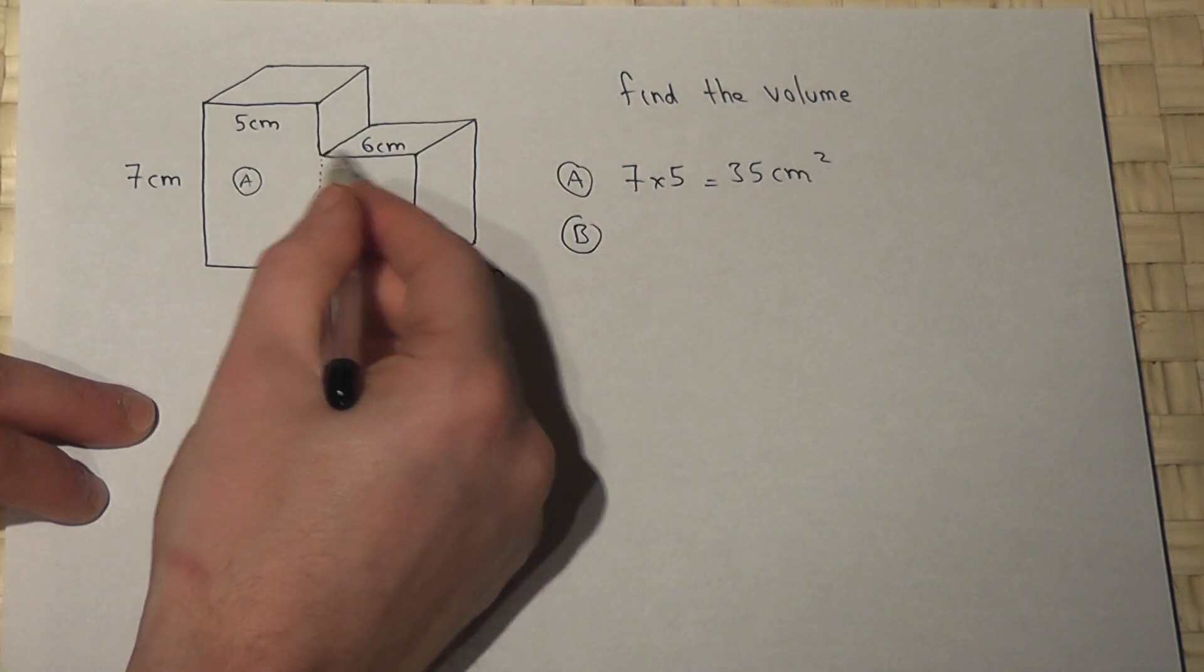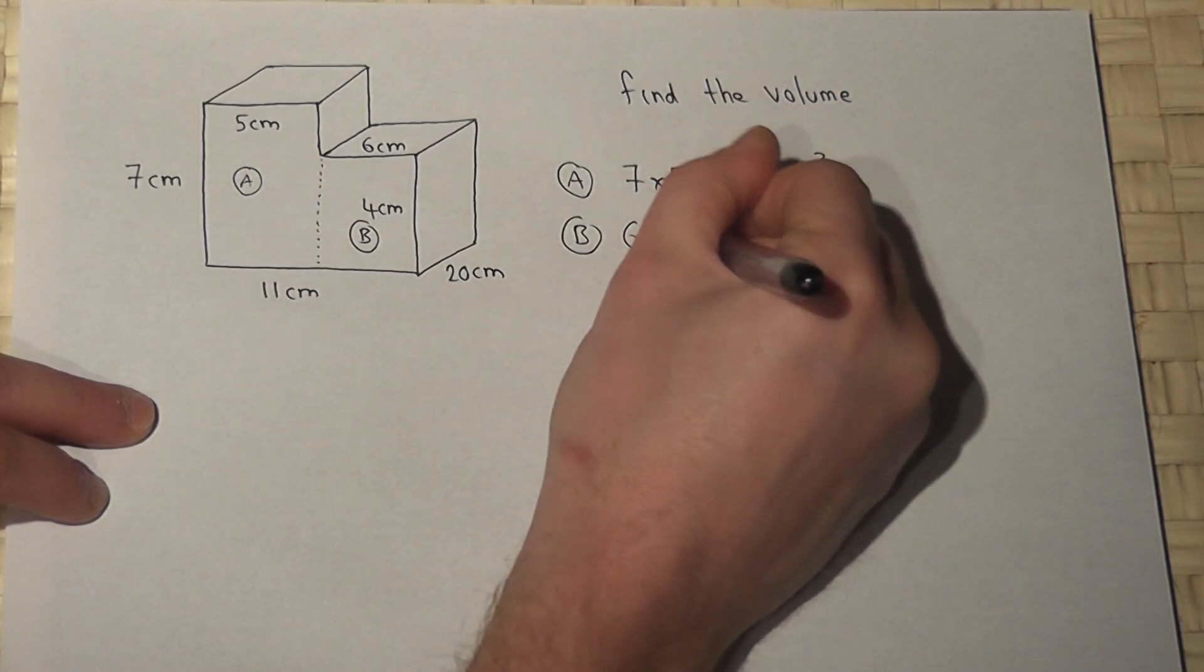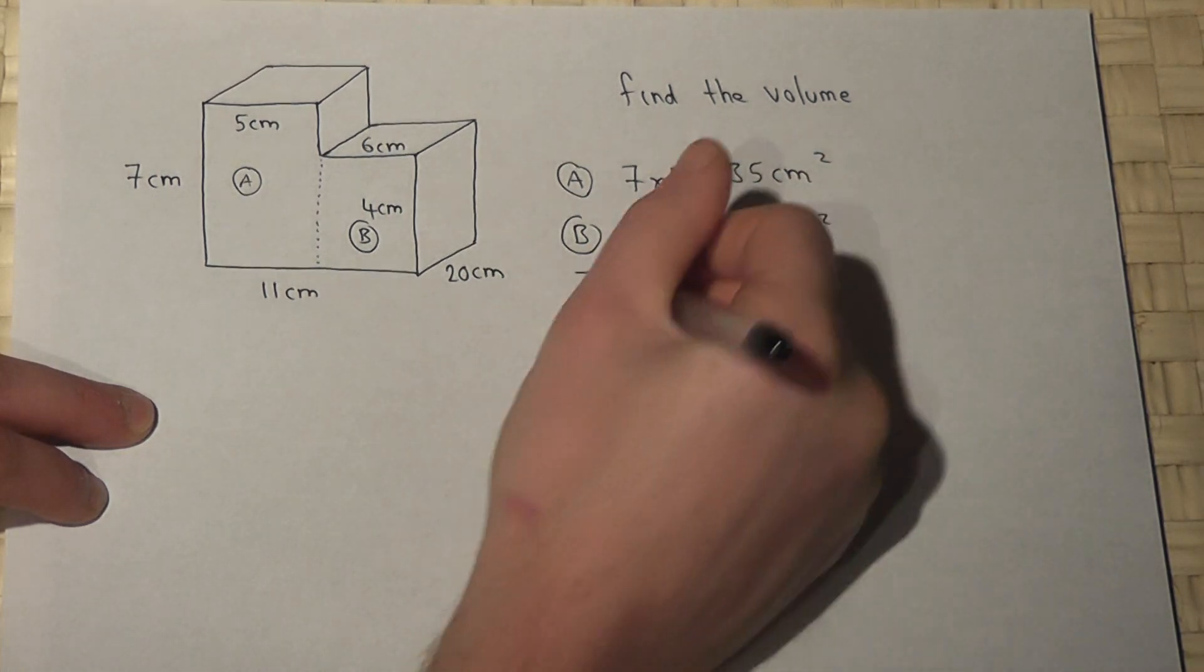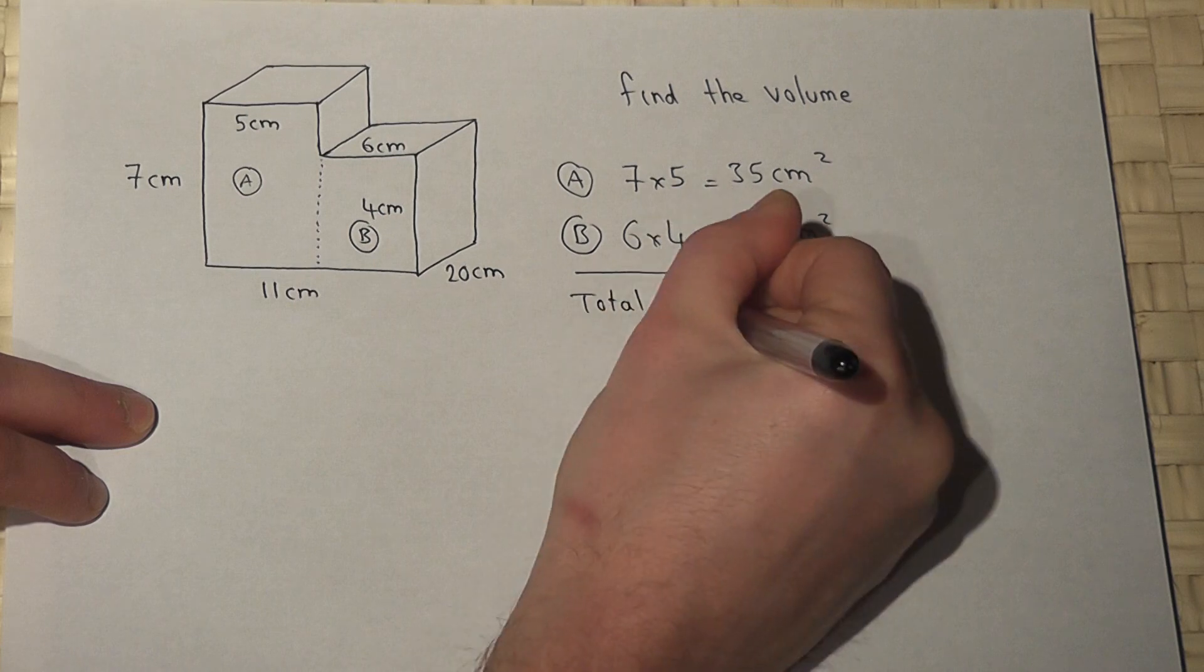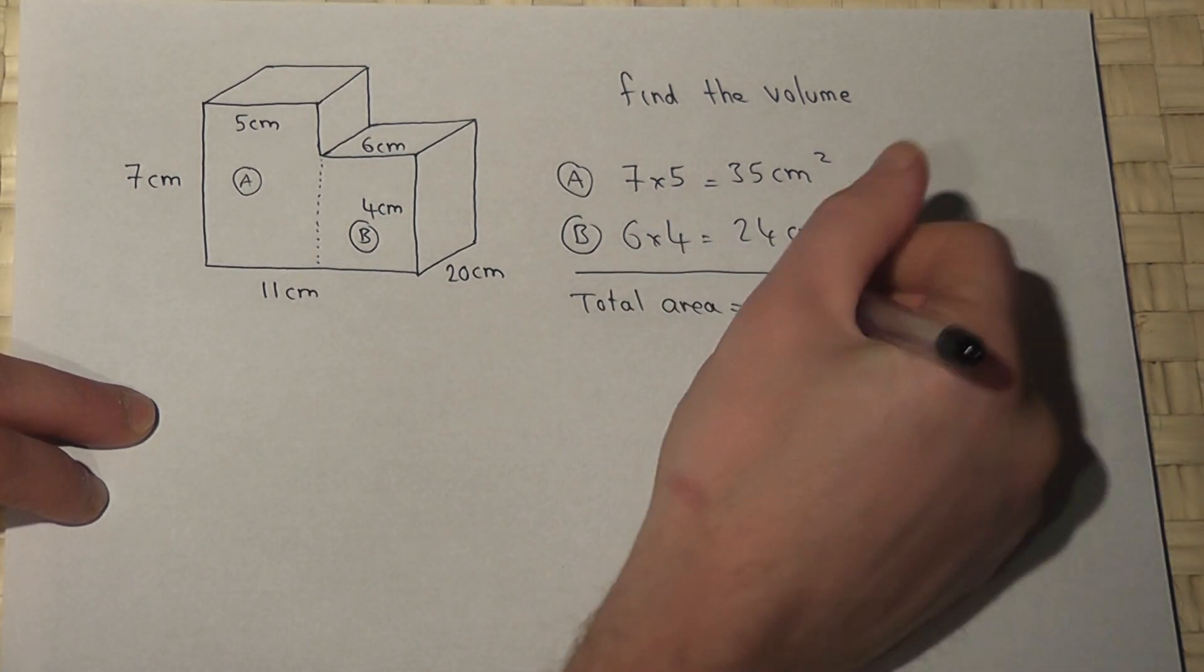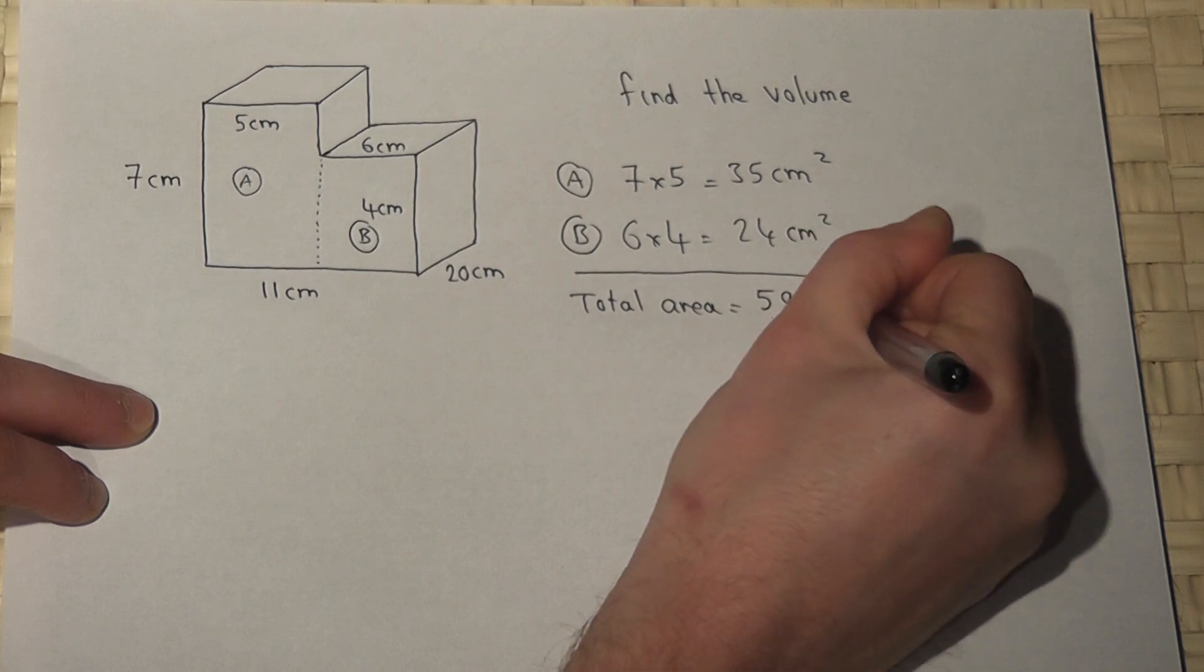So this area is 6 times 4 which is 24 centimeters squared. So the total area of the face is just 35 plus 24 which is 59 centimeters squared.